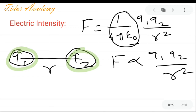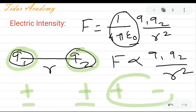For like charges, there is repulsion. Suppose one charge is positive and another charge is also positive, so there is repulsion between them. Also if both charges are negative, there is also repulsion. But if one charge is positive and another charge is negative, there is attraction between these unlike charges. So force may be attractive as well as repulsive.